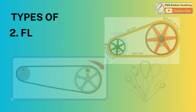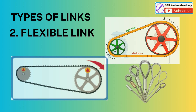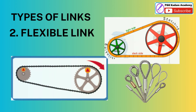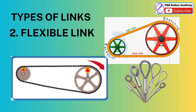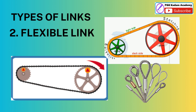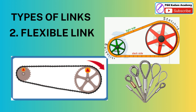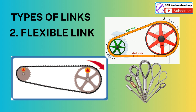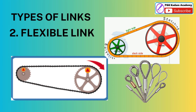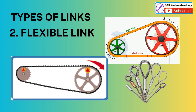A Flexible Link is one which is partly deformed in a manner that does not affect the transmission of motion. For example, belts, ropes, chains, and wires are flexible links and transmit tensile forces only.